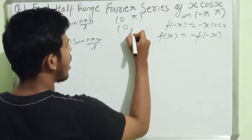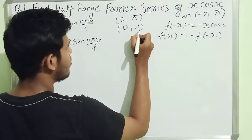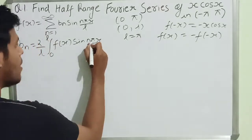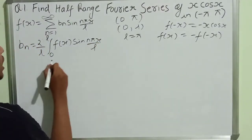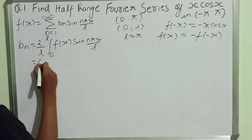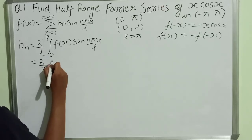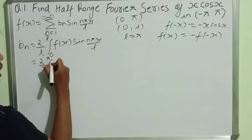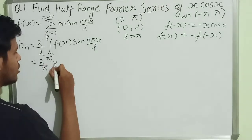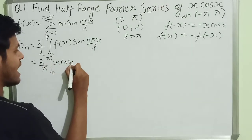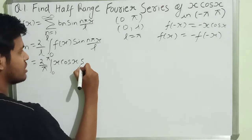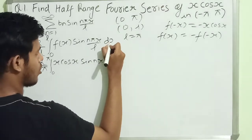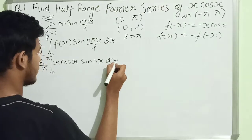Comparing the half-range interval 0 to π with 0 to l, the value of l is π, so l cancels with π. Therefore b_n equals 2 upon π, times the integral from 0 to π of x·cos(x)·sin(nx) dx.